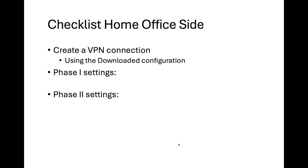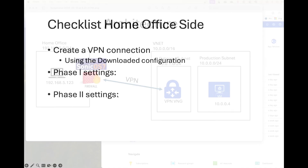Then we're going to add a connection to the virtual network gateway. We're going to use a pre-shared key that we're going to use at the SonicWall site as well. And then we're going to download the sample configuration, which is what we're going to use on-prem on the SonicWall. On the home office side, what we're going to do is we're going to log into the SonicWall, create a new VPN connection using the downloaded configuration. We're going to use the phase one settings and the phase two settings, use the pre-shared key, and then we're going to be able to ping the other side of the tunnel.